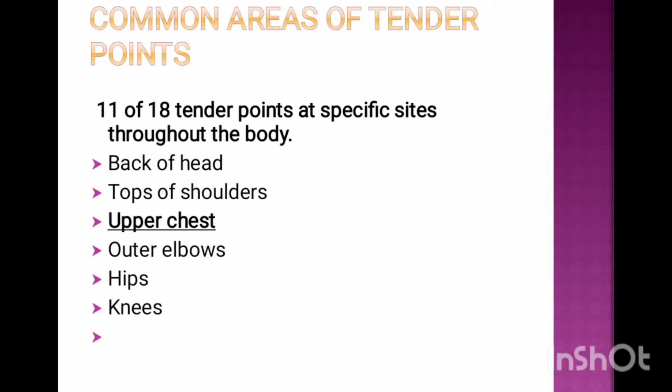Common areas of tender points: 11 of 18 tender points at specific sites throughout the body may include: 1. Back of the head, 2. Top of shoulders, 3. Upper chest, 4. Outer elbows, 5. Hips.